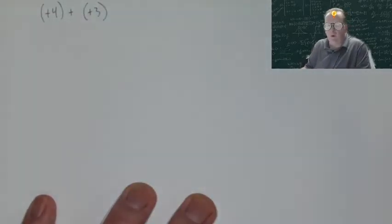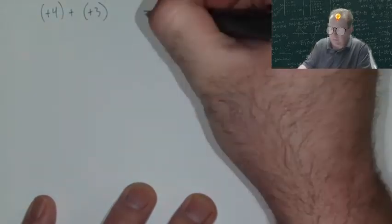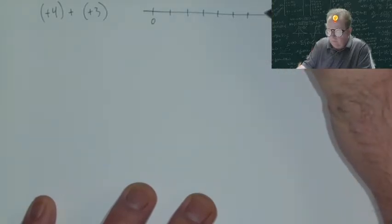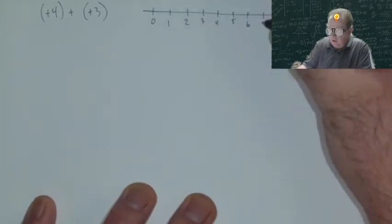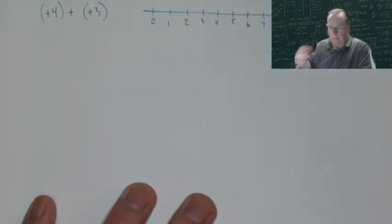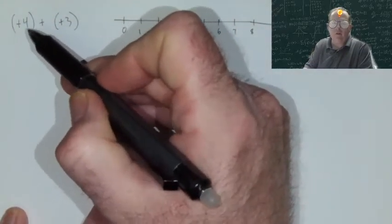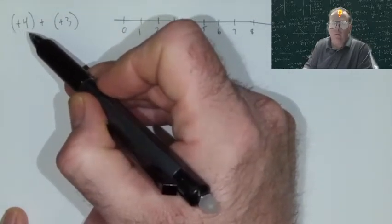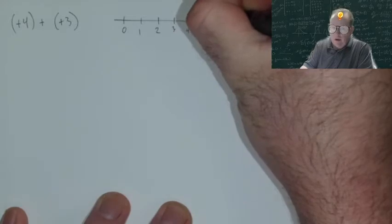So with this example, positive 4 plus positive 3, let me show you how to do this on a number line. It's quite straightforward. If we've got a number line here, and in this case I'm just drawing a positive number line. Here's how we do this. We start always by looking at the first number in the equation, or in the expression in this case. Positive 4. We find that number on our number line and that is our starting point, right there.